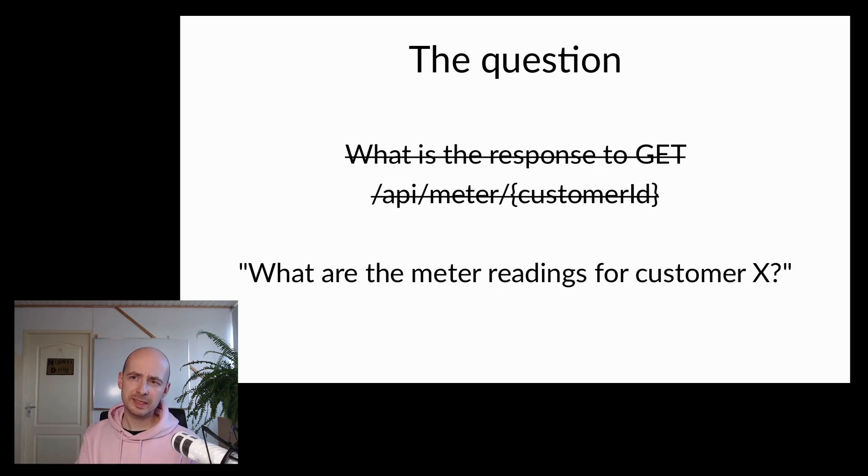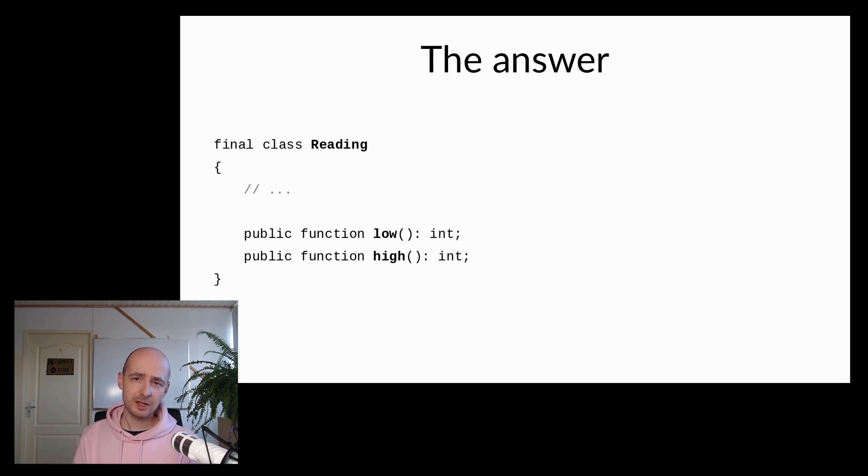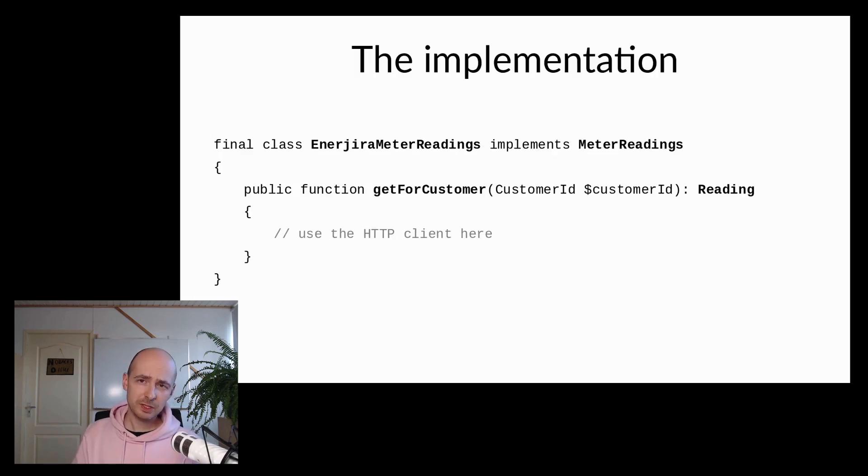The question that our application code should ask in this case is not what is the response to an HTTP GET request for API meter something something, but what are the meter readings for customer X? This results in our question interface, called meter readings, with that single query method getForCustomer, which returns a reading object. The reading object will have a low and a high method to return the separate readings. And as long as we use the Energira API specifically, we will have a single implementation of the meter readings interface, which uses the HTTP client, just like we did before.